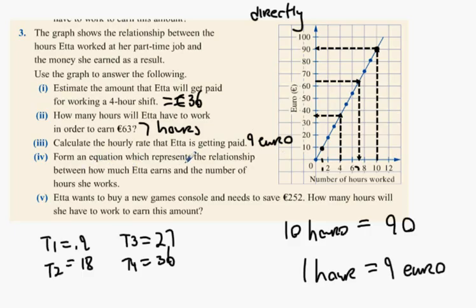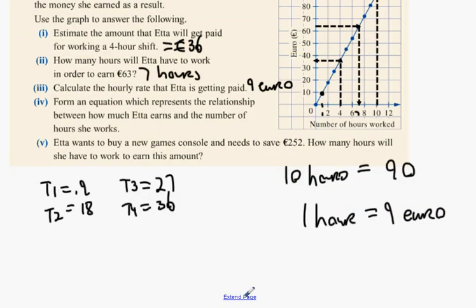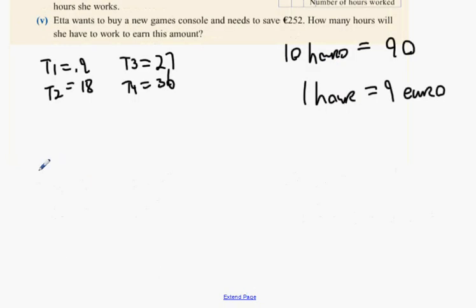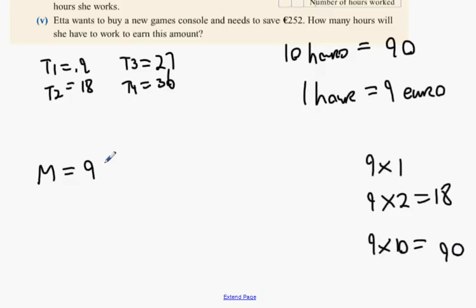Form an equation which represents the relationship between how much money Etta earns and the number of hours she works. If I work one hour I get 9 × 1 = 9. If I work two hours, 9 × 2 = 18. If I work ten hours, 9 × 10 = 90. So 9 × t, where t represents how many hours you worked.